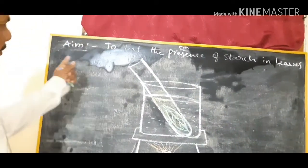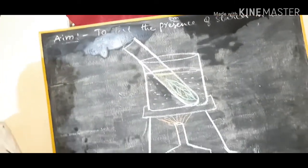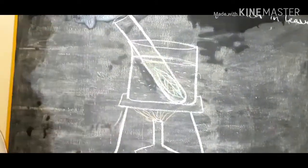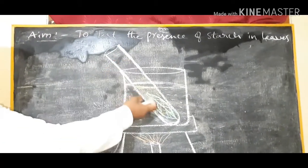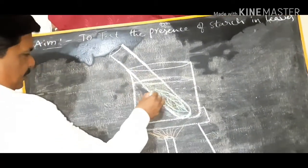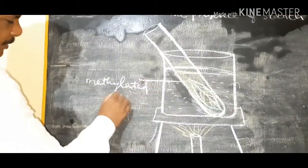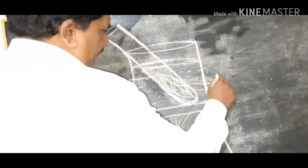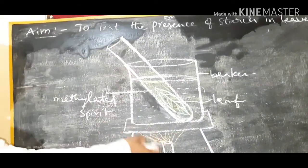Our activity aim is to test the presence of starch in leaves. For this activity, we need the requirements: tripod stand, Bunsen burner, metal sheet, beaker with water, test tube, and methylated spirit or alcohol. This is the leaf we are going to test.